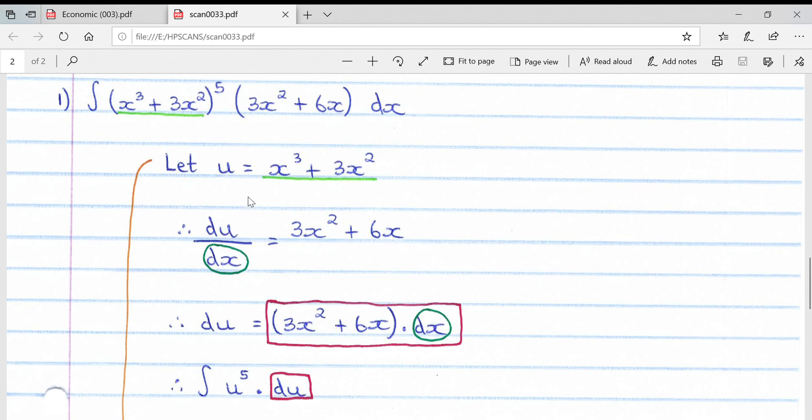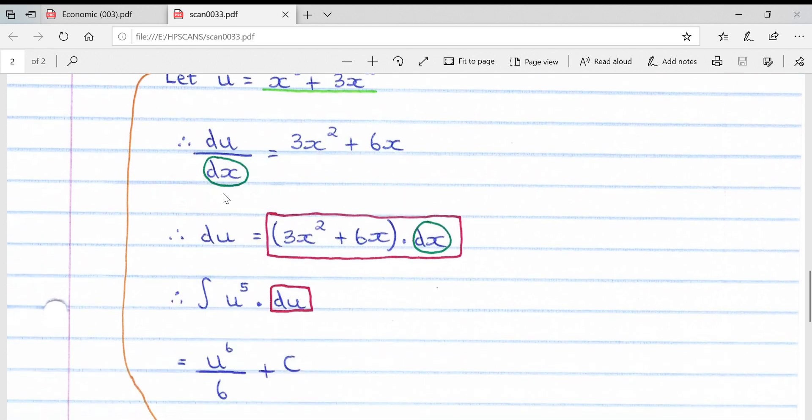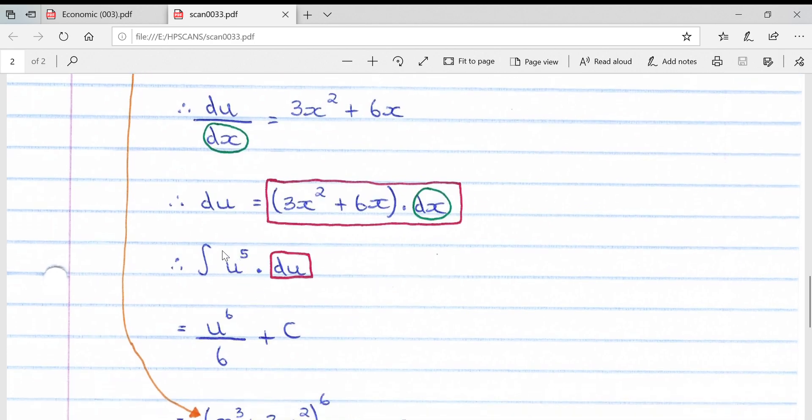Because we have dx in the denominator, we flip the dx up onto the right-hand side and multiply it in, then we're just left with du. So du equals 3x squared plus 6x all multiplied by dx. Then we go back to our original equation. We made u equal to x cubed plus 3x squared, so this to the power of 5 is essentially u to the power of 5.